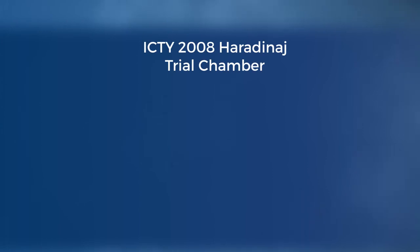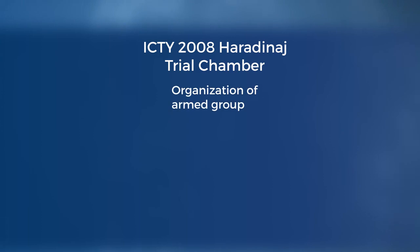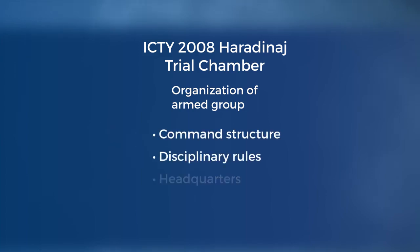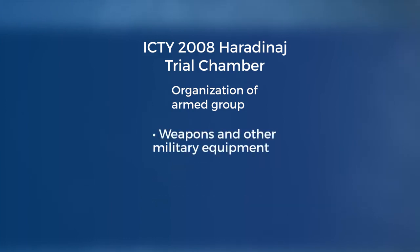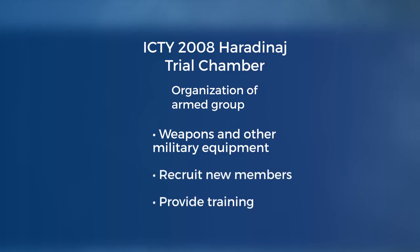In the 2008 Haradinaj NIAC decision, the ICTY Trial Chamber identified a number of indicative factors to assess whether an armed group satisfies the organisation criterion under Common Article III. These indicators include, among others, the existence of a command structure, disciplinary rules, a headquarters for the group, and territorial control, as well as the ability to access weapons and other military equipment, the capacity to recruit new members, and the ability to provide training.